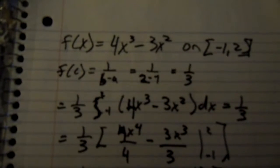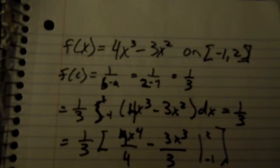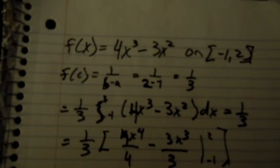This is problem 29 from the practice test number 4. It wants us to find the average value of f of x equals 4x to the 3rd minus 3x squared on the closed interval negative 1 to 2.